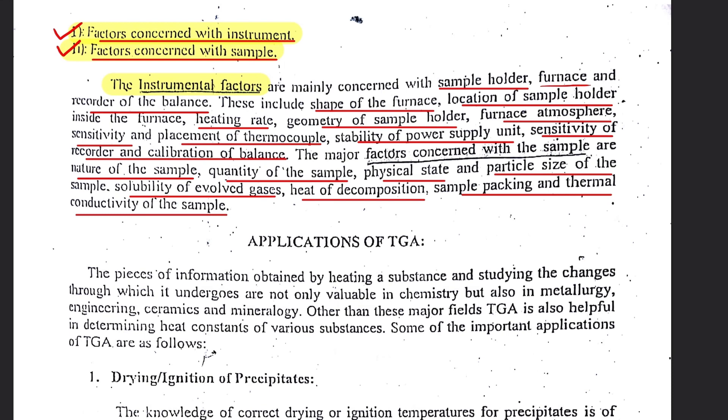Remember that these are two factors that if we take a reading of a single sample, it can have variations in that analysis. The variations due to the instrumental factors include the variations due to sample holder, due to the furnace and recorder of the balance, due to the shape of the furnace, due to the location of sample holder inside the furnace, heating rate at which we are heating from zero to five hundred or one thousand and which increments of heating we are using, similarly geometry of the sample holder, the furnace atmosphere, sensitivity and placement of thermocouple, stability of the power supply unit, sensitivity of the recorder, and calibration of the balance.